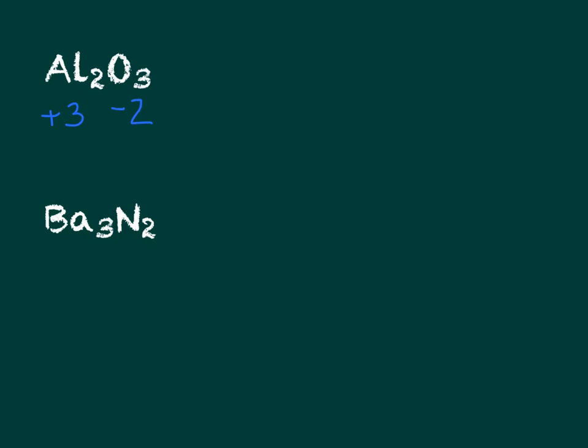Aluminum with a plus three charge, since it's a positive charge, there's no name change from the element name. So it's just simply aluminum. Oxygen with a minus two charge, because it has a negative charge, we change the ending of the name to -ide. So it's going to be aluminum oxide.